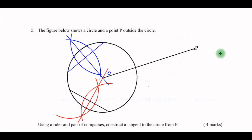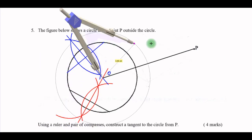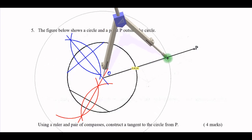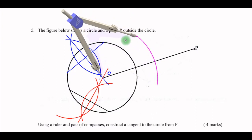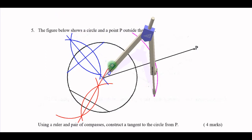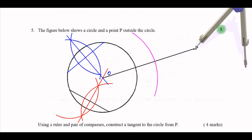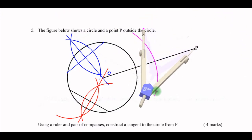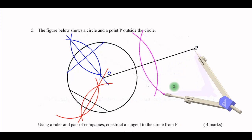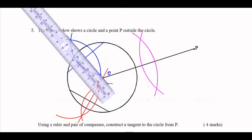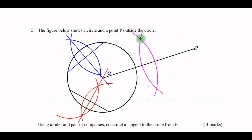From there I need to bisect OP. Using O as the center, I use a radius more than half of OP and put arcs at two distinct points. Then using P as the center and maintaining the same radius, I put marks there as well. I then join the intersection of the two arcs.